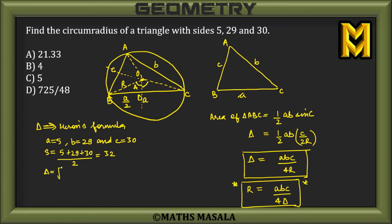So area would be the square root of s times (s - a), which is 27, multiplied by (s - b), which is 3, multiplied by (s - c), which is 2.